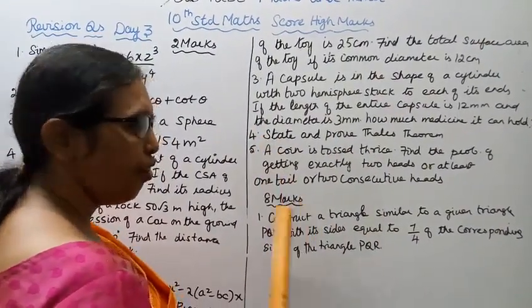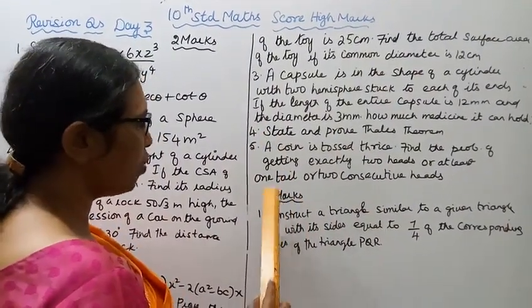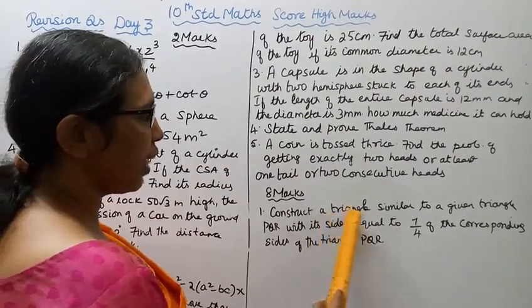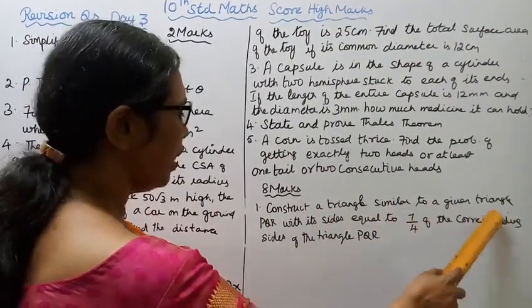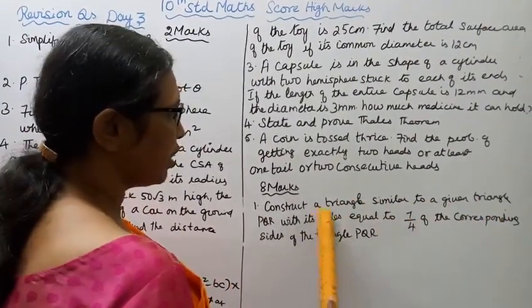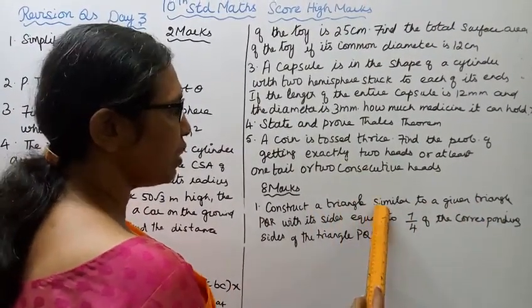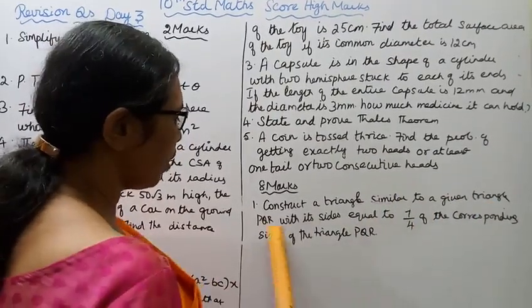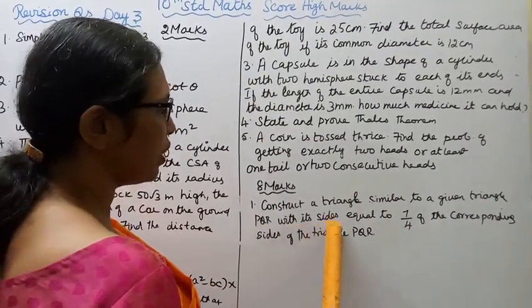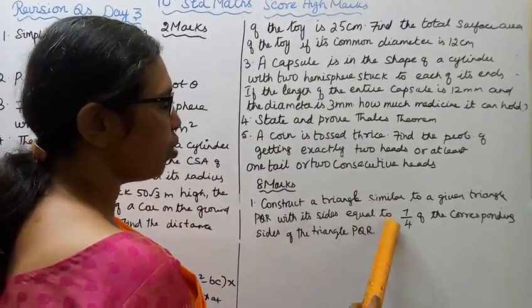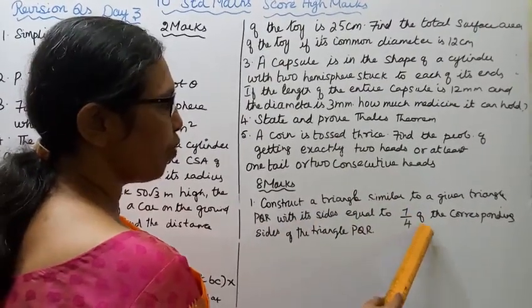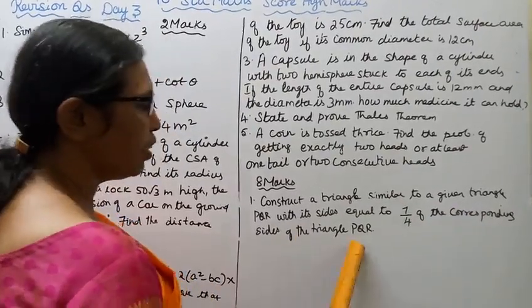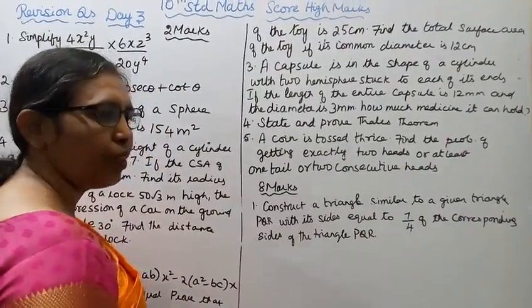5 marks, 8 marks: construct a triangle similar to a given triangle PQR with its sides equal to 7/4 of the corresponding sides of triangle PQR.